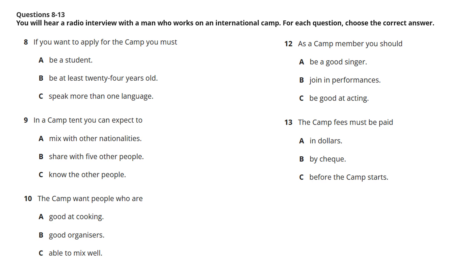And what does it all cost? Well, you have to find your own way to the camp, so it's up to you whether you fly, cycle, walk, hitchhike or whatever. The charge for a week's camp is $300, but you'll have to change that into your own currency to get a better idea of the cost. You have to pay the full cost before you arrive, but you can pay in any currency you want, or you can use a credit card if you have one.